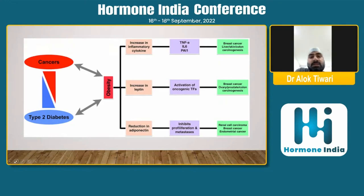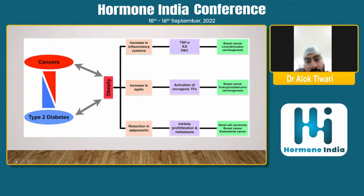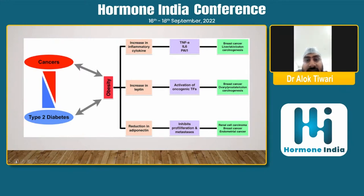Cancer represents a kind of nexus — we see a circle between type 2 diabetes, cancer, and obesity. With obesity, inflammatory markers such as IL-6 and TNF-alpha all increase, and constant inflammation is one of the conditions conducive to cancer development. In organs with less insulin receptor activity, cancer may occur due to the inflammatory cytokine pathway. This explains why breast cancers, liver cancers, and skin cancers are more common. Leptin increase also activates oncogenic tumor factors, increasing cellular proliferation and driving breast, ovarian, and prostate cancers.